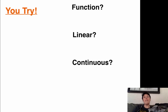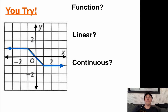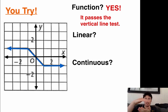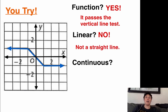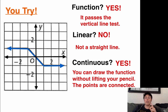Now it's your turn — time for a U-try problem. Analyze this graph and answer: is it a function, is it linear, and is it continuous? Pause the video and try. Ready to check? It passes the vertical line test, so yes, it's definitely a function. Is it linear? It looks like straight lines, but it's actually multiple lines — three lines — so it's not a singular straight line, so no. Is it continuous? Yes — you never have to lift your pencil, so you can draw it without lifting your pencil and the points are connected.